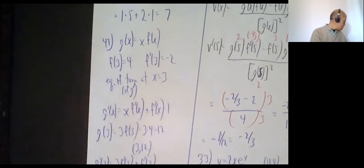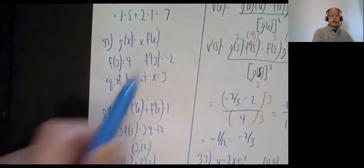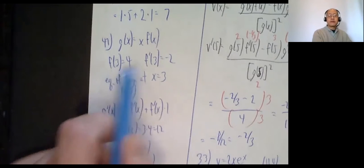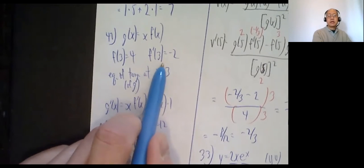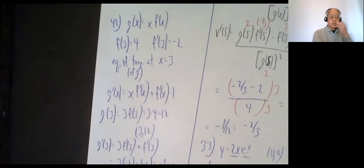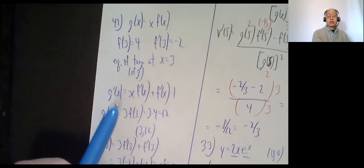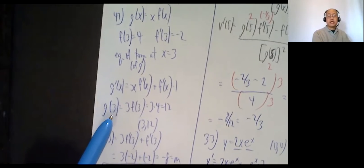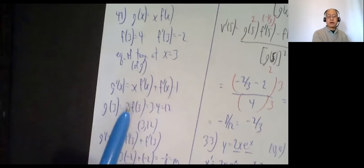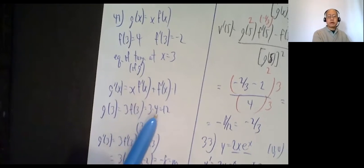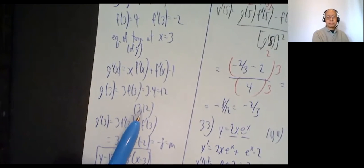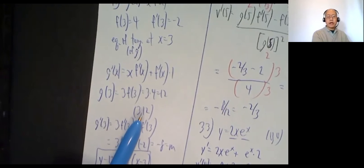Problem 47: g of x is x times f of x. They tell me f of 3 is 4 and f prime of 3 is negative 2. Find the equation of the tangent line at x equals 3 of g. First, what is g of 3? Plug in 3: it's 3 times f of 3. F of 3 is 4, so 3 times 4 is 12. So the point is (3, 12).